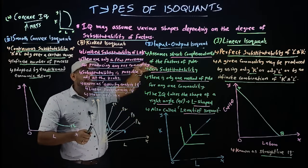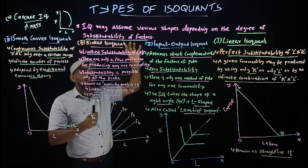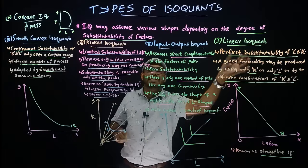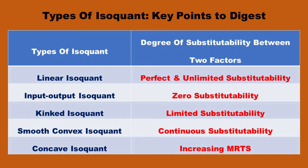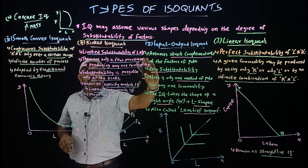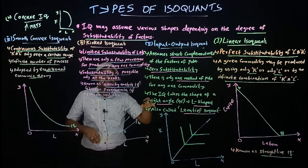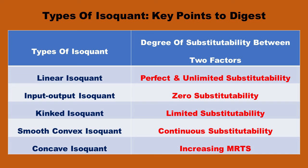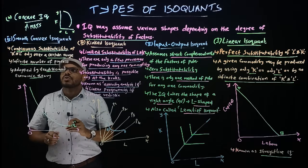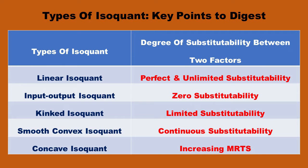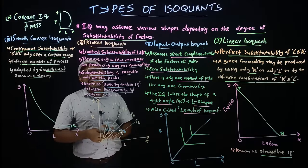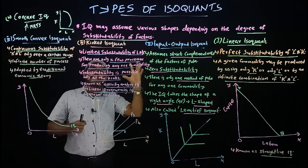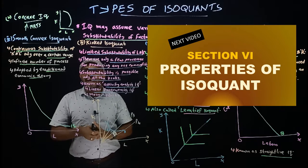To summarize, the degree of substitutability of labor and capital is the key concept across all types. Linear isoquant — perfect or unlimited substitutability. Input-output isoquant — zero substitutability, strict complementarity of factors. Kinked isoquant — limited substitutability. Smooth convex isoquant — continuous substitutability. By remembering these keywords in a table format, you can score full marks on any question about types of isoquants. In the coming video, we will discuss the properties of isoquants. Have a nice day, thank you.